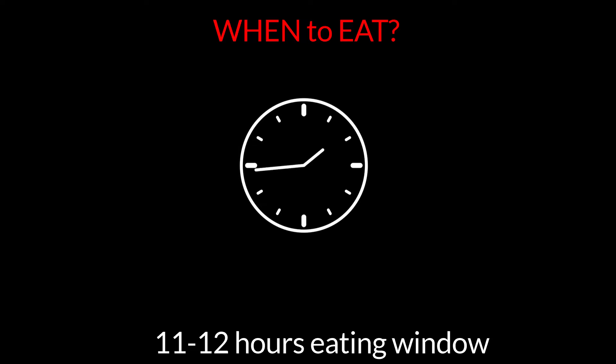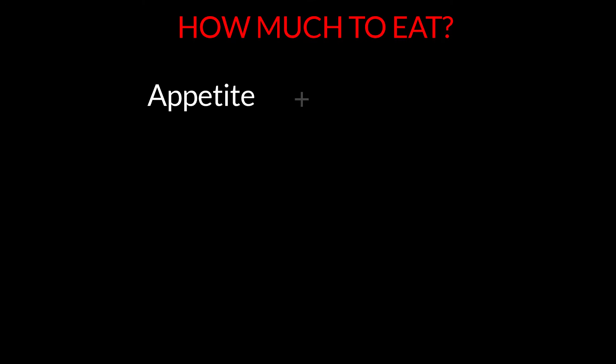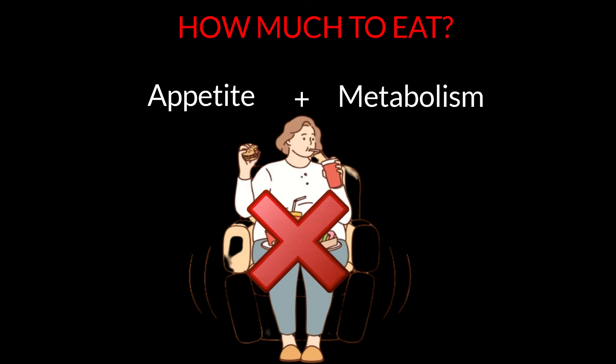In terms of when to eat, try to stick to an 11 to 12 hour eating window and leave a gap of at least 12 to 13 hours between your last meal and your first meal of the next day. Your dinner should be as close to sunset as possible. How much to eat is determined by your appetite and metabolism, but you must avoid overeating, as overeating is the primary cause of fat deposition in the body and ultimately in the organs. Eat smaller portions through the day.